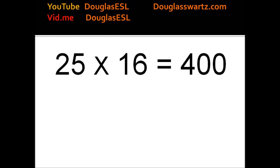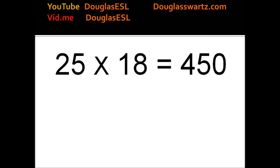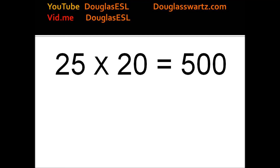25 times 17 equals 425. 25 times 18 equals 450. 25 times 19 equals 475. 25 times 20 equals 500.